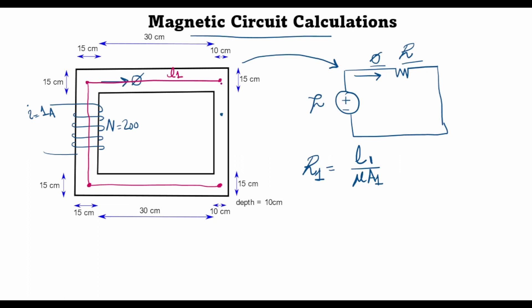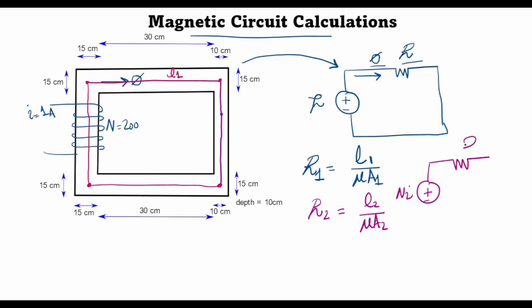Similarly, we find the mean path length of the magnetic flux through the fourth, thinner limb, calculate its area A2, and find reluctance R2 = L2 / (mu × A2). Our total equivalent circuit therefore consists of the magnetomotive force N×I, with reluctances R1 and R2 in series, and we solve for the total magnetic flux flowing through the circuit.